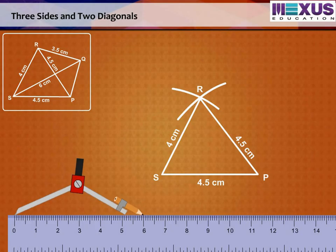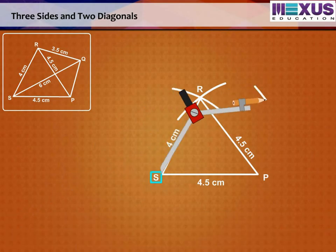Draw an arc of radius 6 cm with S as center. We would get Q somewhere on the drawn arc. Step 3.